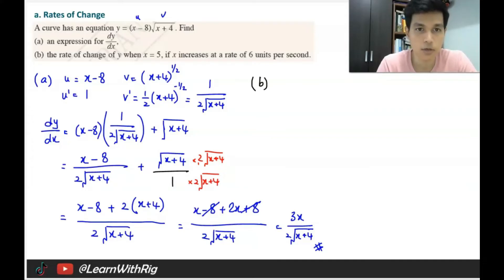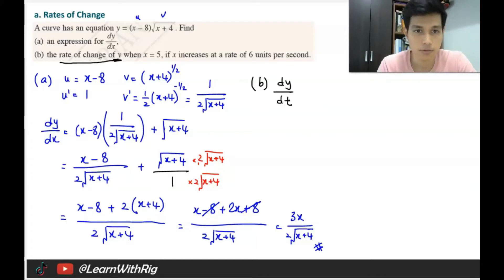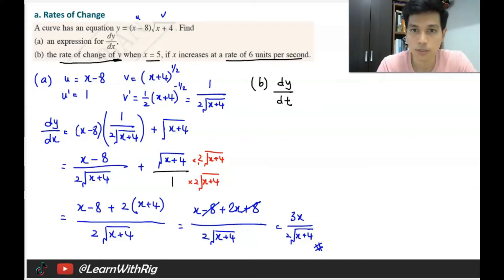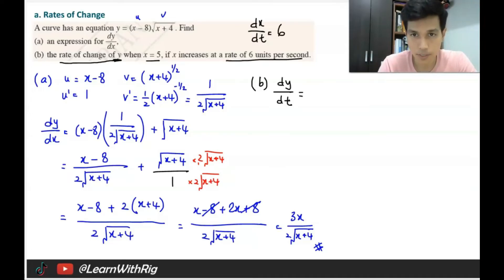Question (b) asks: find the rate of change of y — that means dy/dt — when x = 5, given that x increases at a rate of 6 units per second. The x is increasing, so this rate of change of x means dx/dt = 6. Now you can form the chain rule equation: dy/dt = dy/dx times dx/dt.